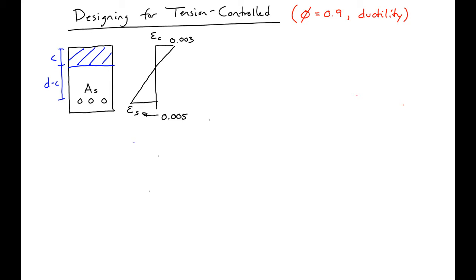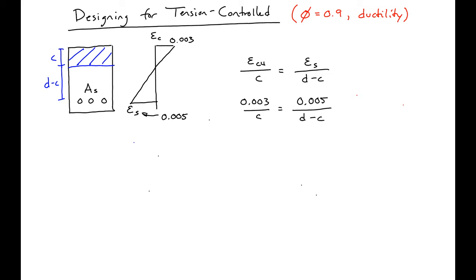First, we can set up our two similar triangles. We'll say ε_c over C is equal to ε_s over D minus C. If we plug in our concrete strain of 0.003 and our tension-controlled strain of 0.005, we can solve this expression for C and find that C equals D times 0.003 over (0.003 plus 0.005).